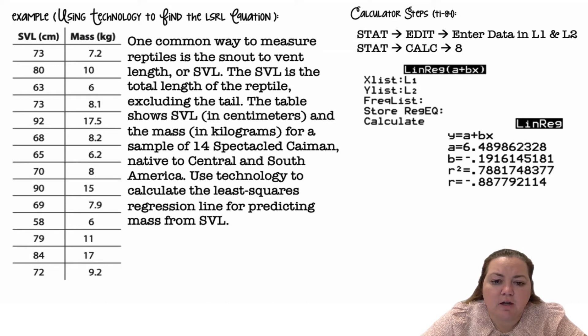All right, so if we were doing this in our calculator, we go to stat, edit, we're going to enter the data into list one and list two. We're going to go to stat, calc, option eight, linear regression, a plus bx, and we're going to go down to calculate. We're going to use list one for my x list, list two for my y list, and go to calculate, and it should give you a, b, r squared, and r, and a and b are what you're going to use in your equation.